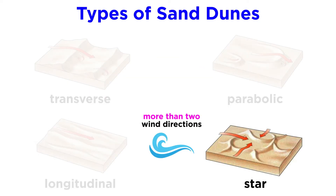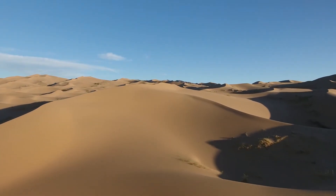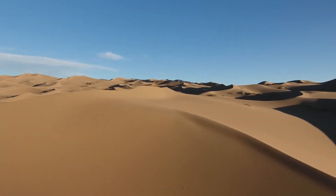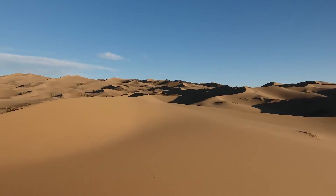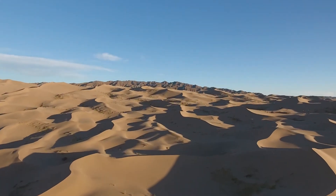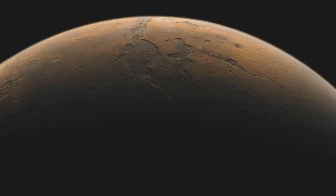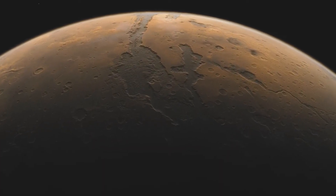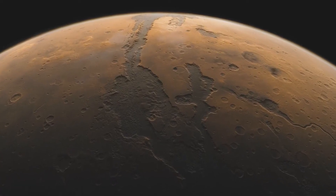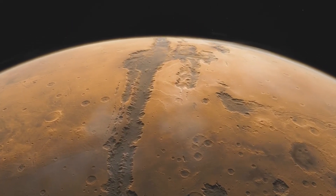Star dunes have a starfish shape and occur in environments that have more than two main wind directions. Beyond being a widespread feature of deserts on Earth, dunes also appear to occur on other worlds in the solar system.